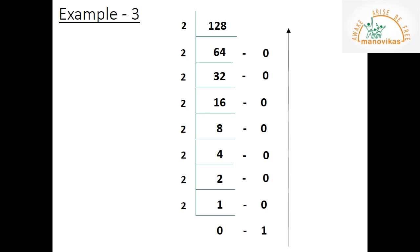So when dividing 1 by 2, the quotient will be 0 and the remainder will be 1. Reading all the remainders from bottom to top, the answer is 10000000 to the base 2. That is the binary equivalent of 128.